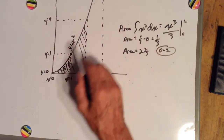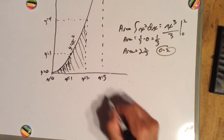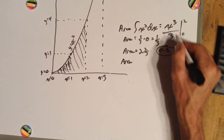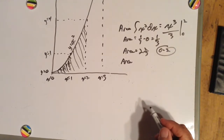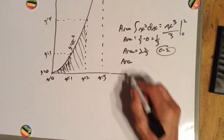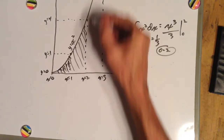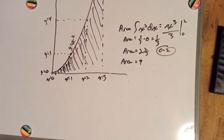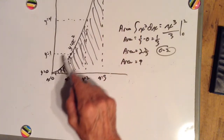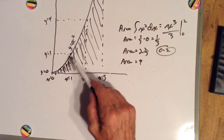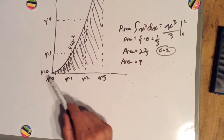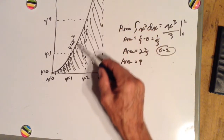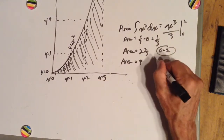As x gets bigger, our area gets exponentially bigger. The area from 0 to 3 would be 3 cubed over 3 minus 0. Well, 3 cubed over 3 is 3 squared, which is 9. As you might have noticed, the area underneath this curve is always 1 third of the area of the rectangle that this curve sits in. We have 3 by 9 is the area of this rectangle, and yet the area under the curve was 9, which is 1 third of 27.